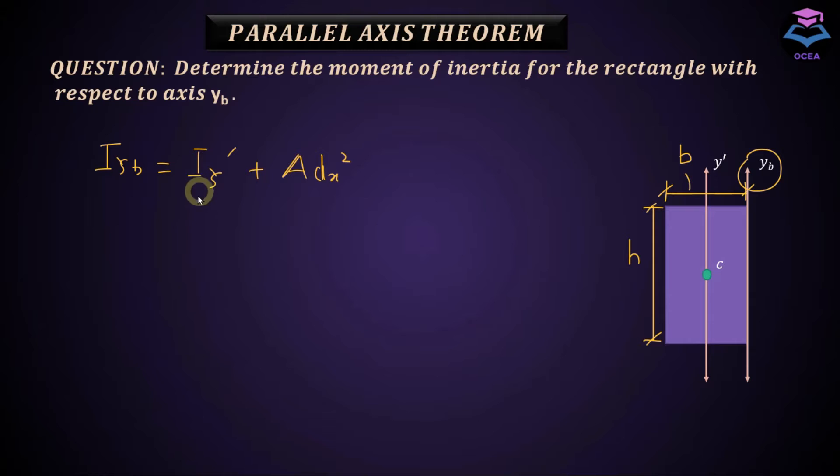And we know that from previous lecture that moment of inertia about this axis, y dash axis is equal to hb cubed divided by 12. Plus a is the area of rectangle, which is equal to b into h, and dx is the perpendicular distance between y dash axis and yb axis, and this is equal to b by 2.